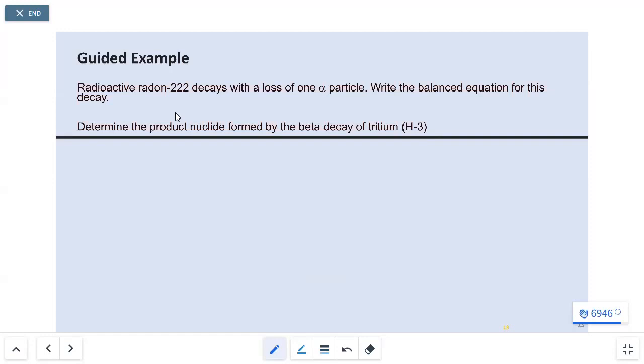So once again, the way that we start this is we have to start with our parent nucleus, which would be radon-222. Radon is Rn. We know the mass number is 222. The periodic table tells us that the atomic number here is 86.